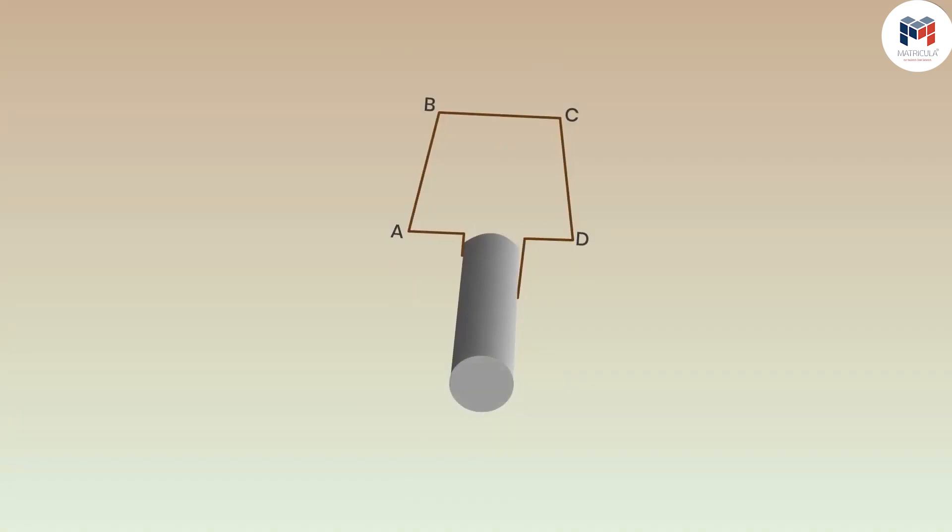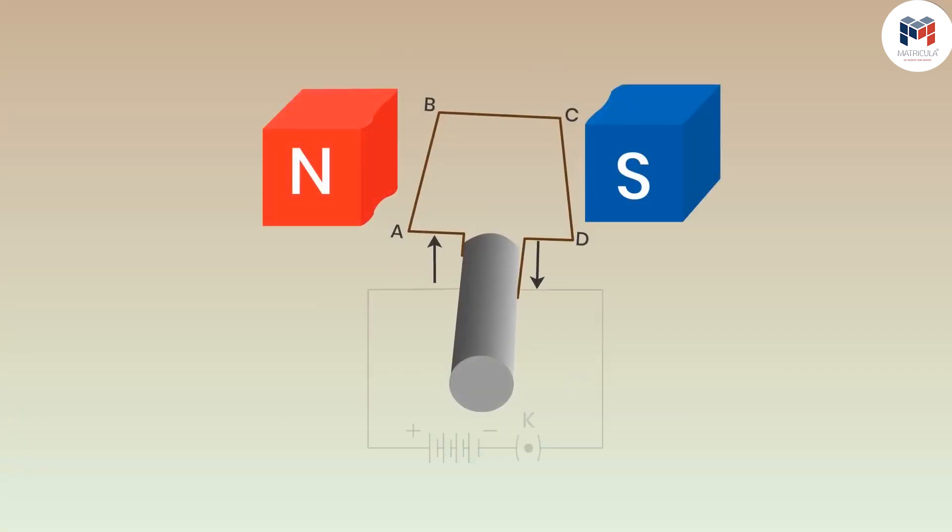If a rectangular coil ABCD is placed in a magnetic field and the ends of the coil are connected with the source of electricity, the electric current starts flowing through the coil when you put on the switch.